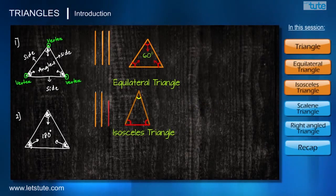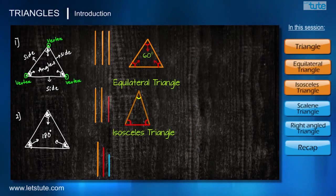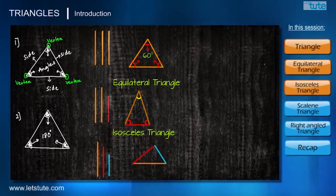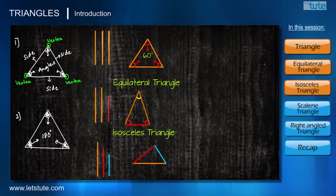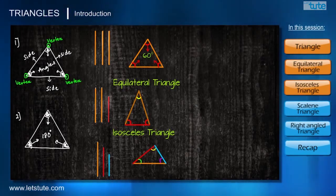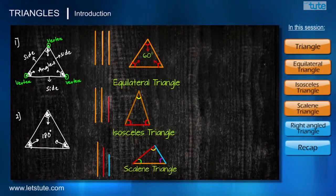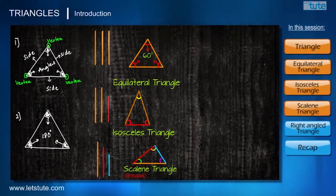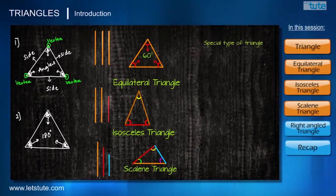Now let's take the case of three different, or unequal, sides and try to form a triangle. When three sides are not equal to each other, the three angles formed will also not be equal to each other — and that is the only way this triangle is possible. Such triangles are called scalene triangles, and the meaning of the term 'scalene' itself is unequal.